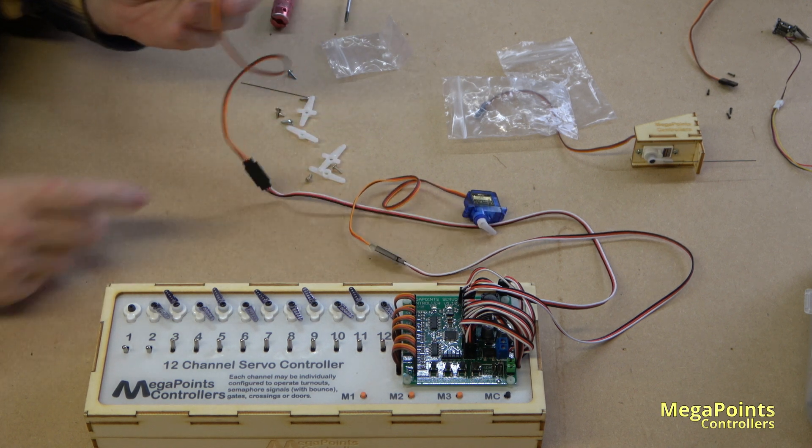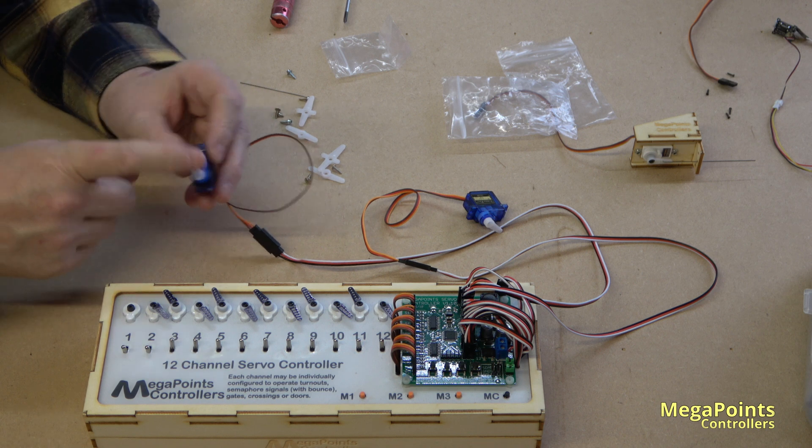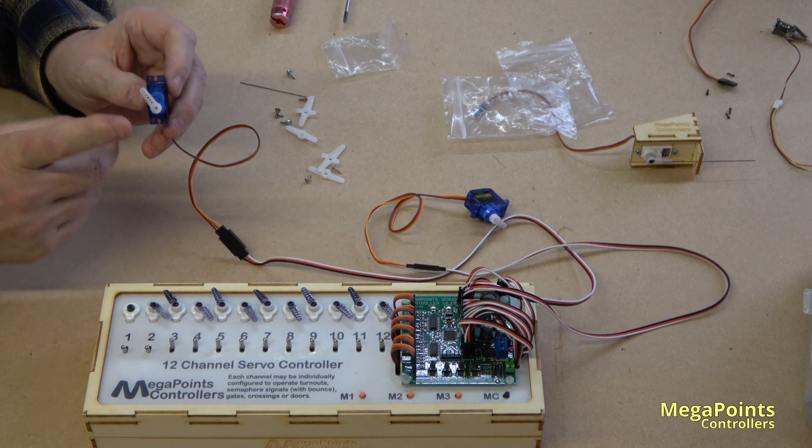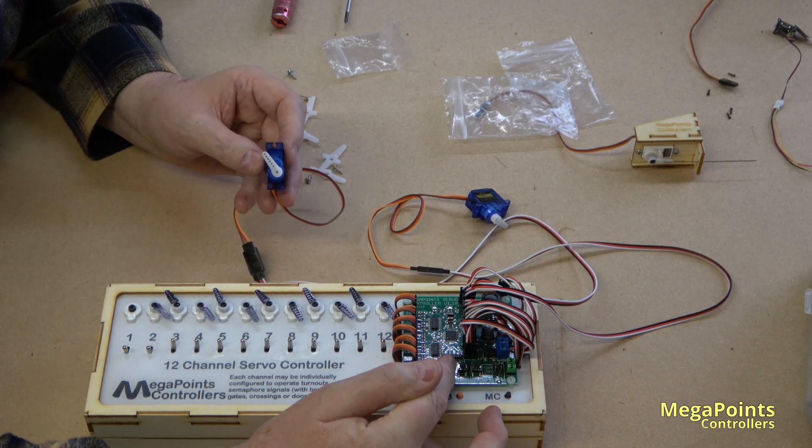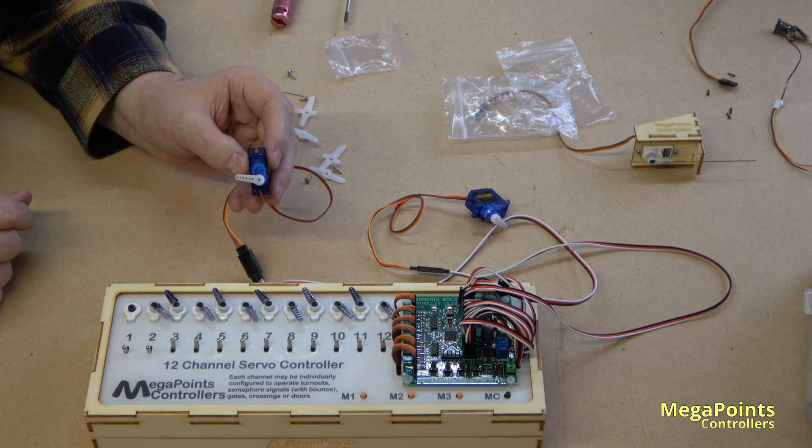Now it's really simple to centre a servo. All you do is put the servo controller into program mode. This is connected to channel number one, so I'll press the program button once. You see the servo jump; it's actually jumped to its electronic centre.